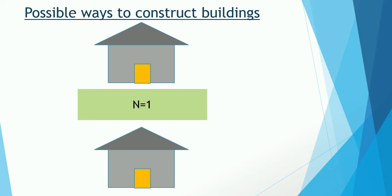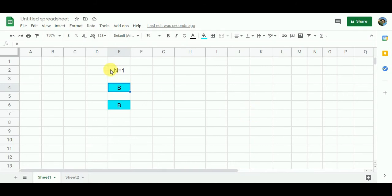If the number of sections is three, we need to find the total number of ways to construct buildings. We start when the number of sections is one as the lowest sub-problem. When n equals one, the first way is when I have buildings on both sides — B on the left and B on the right. That is my first way.